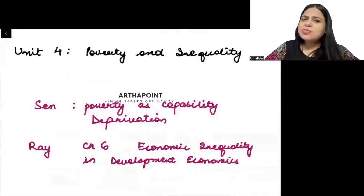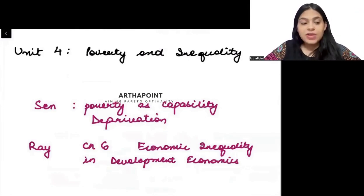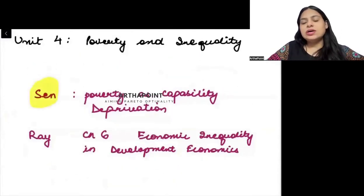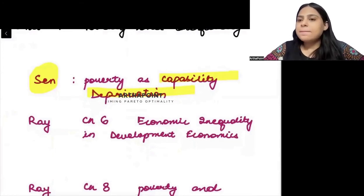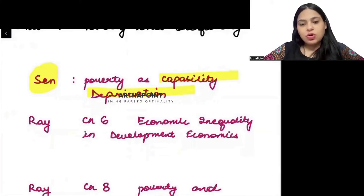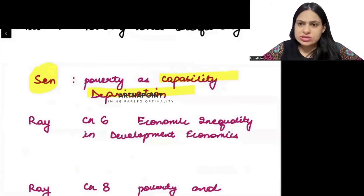The last unit is poverty and inequality — one of my favorite units. I personally prefer to start with Unit 4 first, as it is an interesting unit to understand. We will see whether I start with Unit 1 or Unit 4. In Unit 4 we have a chapter by Amartya Sen called 'Capability Deprivation.' When I got to meet Amartya Sen in person, it was a completely different experience. Every year, Delhi School of Economics used to have special events, and Amartya Sen visited during our period.